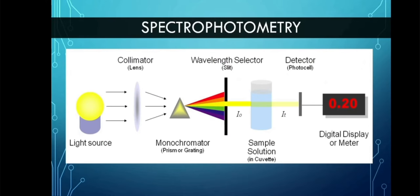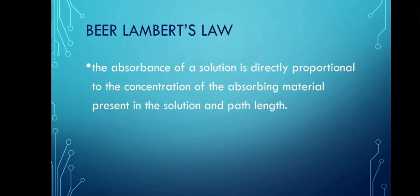Spectrophotometry consists of a light source, collimator, monochromator, a wavelength selector, sample solution detector, and a digital display or meter. From the light source, light is emitted through the collimator, then the monochromator or prism bounces back lights with different wavelengths, then it goes through the sample. The detector or photocell detects what is in the sample and the output is displayed. This is based on Beer-Lambert's law: the absorbance of a solution is directly proportional to the concentration of the absorbing material and path length.